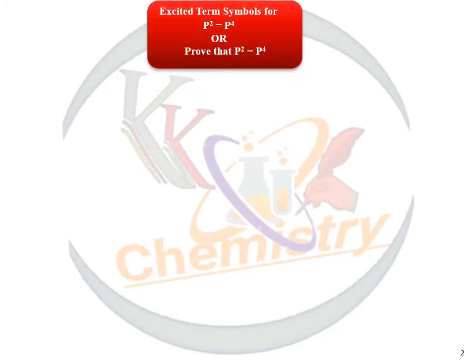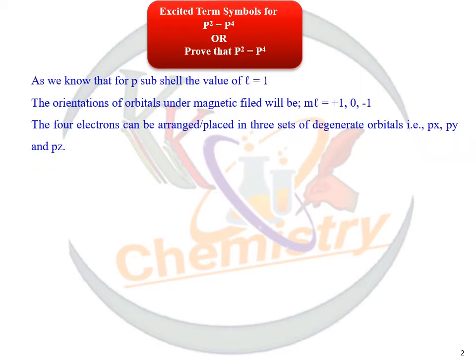Now if a question is given in your question paper to prove whether P² system is equal to P⁴ or not. As we know that for P subshell the L value is 1, so the orientation will be plus 1, 0, and minus 1.